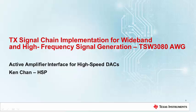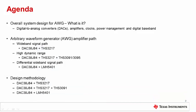The hardware for this active amplifier interface for high-speed DACs is implemented as the TSW3080AWG. The agenda for today will cover an overall system view of the arbitrary waveform generator and its functional blocks. We will then discuss the different arbitrary waveform generator amplifier paths, which include a wideband signal path, a high dynamic range path, and a differential wideband signal path. Finally, we will explore the design methodology for each of the paths.